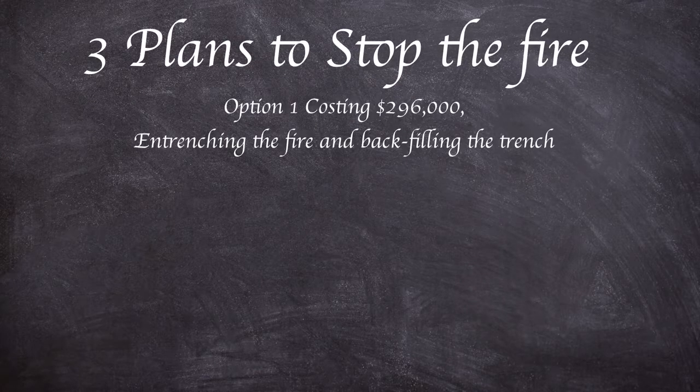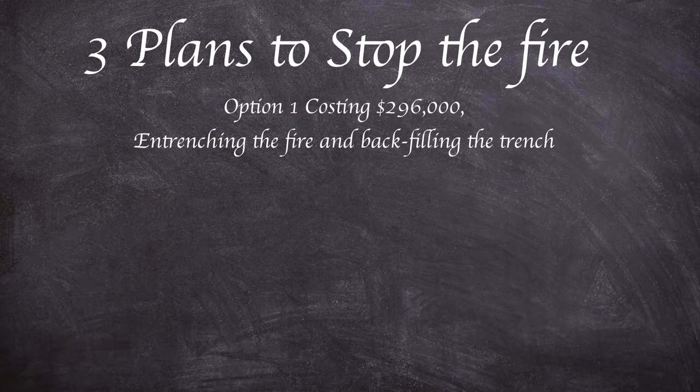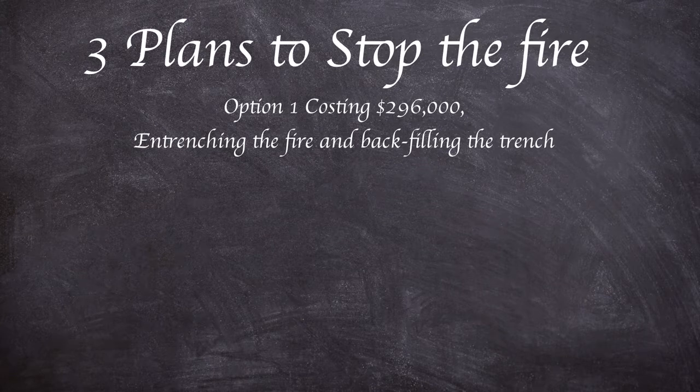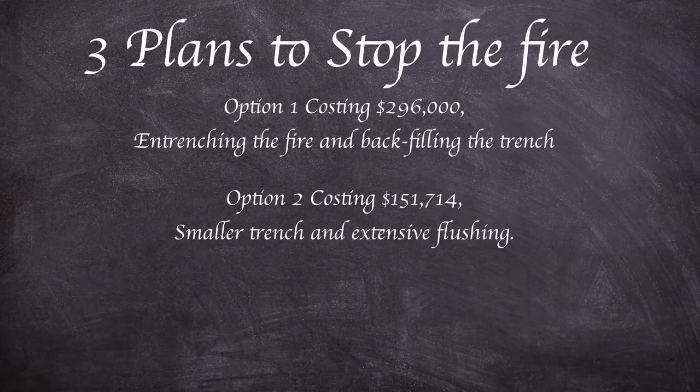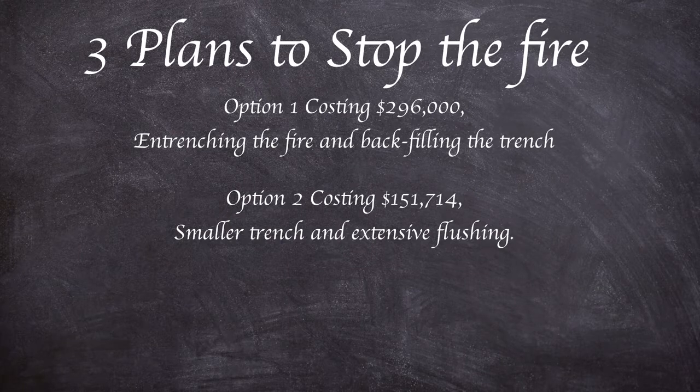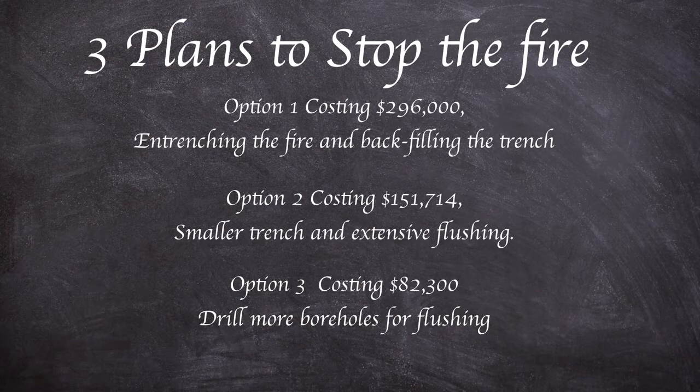Option 1, costing $296,000, consisted of entrenching the fire and backfilling the trench with incombustible material such as clay. Option 2, costing roughly $151,000, offered a smaller trench in an incomplete circle followed by extensive flushing. Option 3 was to drill more boreholes for flushing and would cost around $82,000.